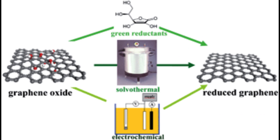Chemical reduction of graphene oxide. Graphene oxide is a derivative of graphene that contains oxygen functional groups. It can be reduced chemically to remove most of the oxygen, yielding reduced graphene oxide (RGO). This process is relatively simple and can be used to produce graphene-like materials.